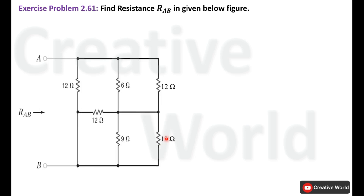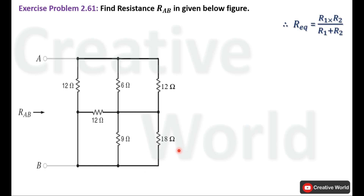Now we modify the circuit. These resistances are now converted into parallel connections, and we can find their equivalent resistances using the parallel equivalent resistance calculation formula.